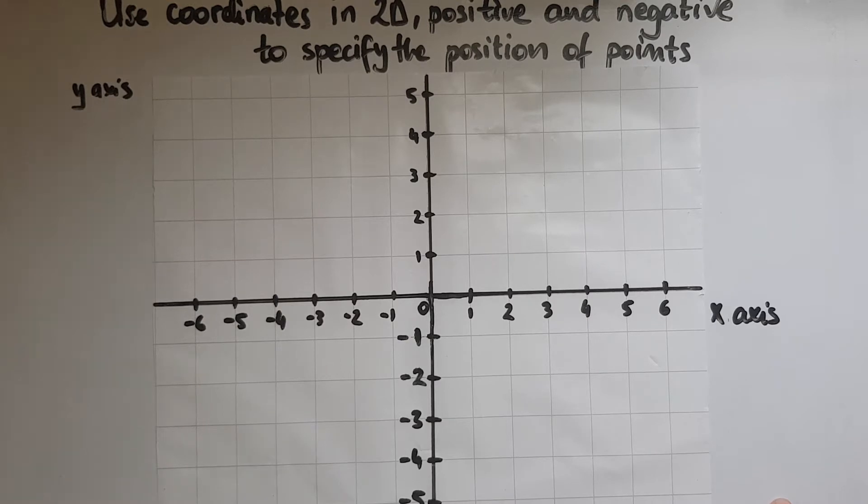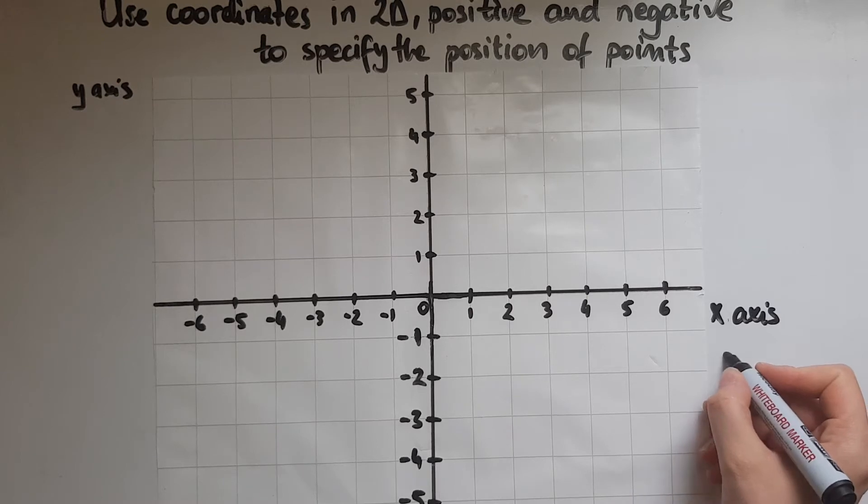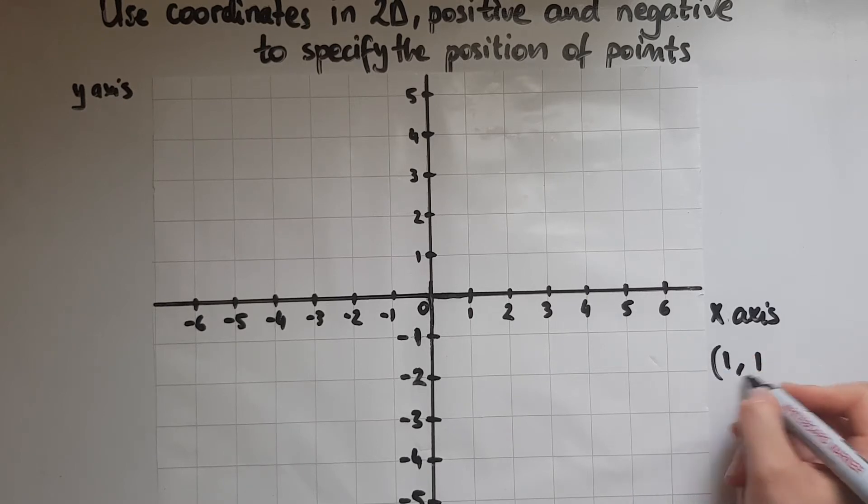What we're going to do is plot some points. I want to plot a point that is (1, 1). What does that mean? The x comes first.